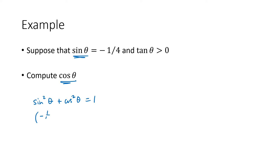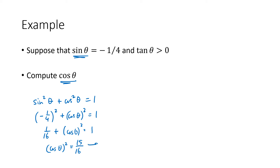We're given that sine of theta is negative one fourth, so we have negative one fourth squared plus cosine squared of theta equals one. That's one sixteenth plus cosine squared of theta equals one, so cosine squared of theta is fifteen sixteenths. That means cosine of theta is plus or minus the square root of 15 over 16. Whenever we take the square root of both sides, we get a plus or minus — so we have a similar question: is it plus or minus?